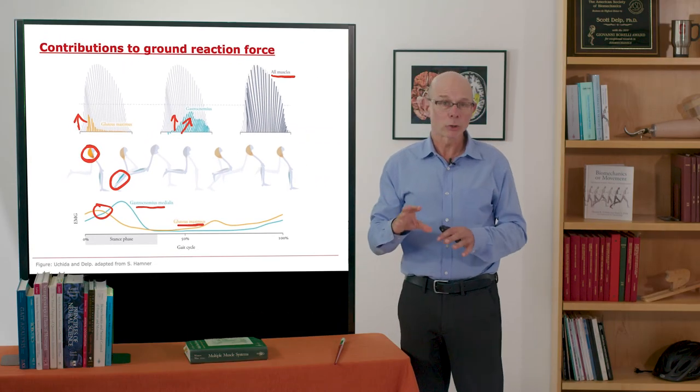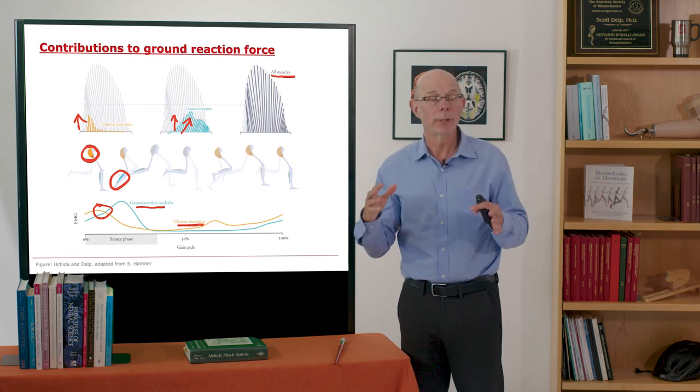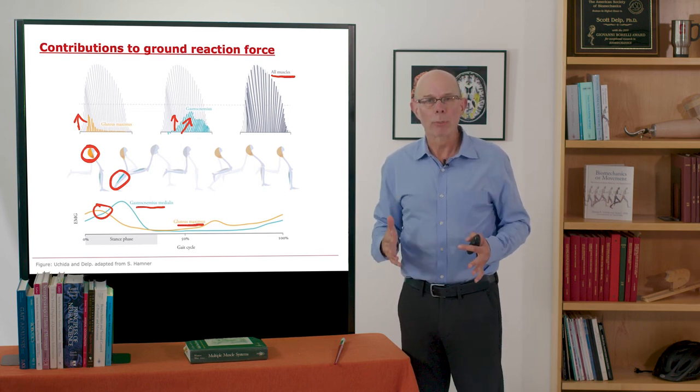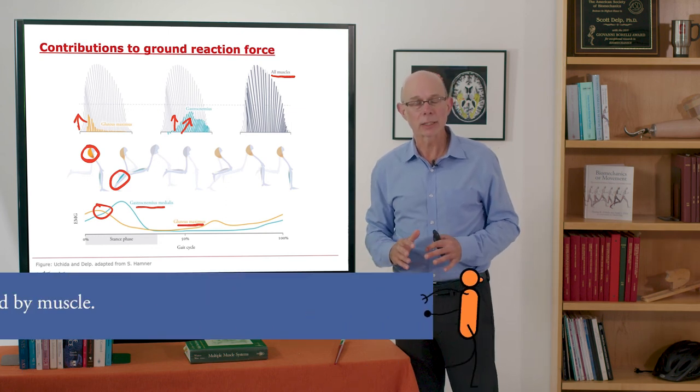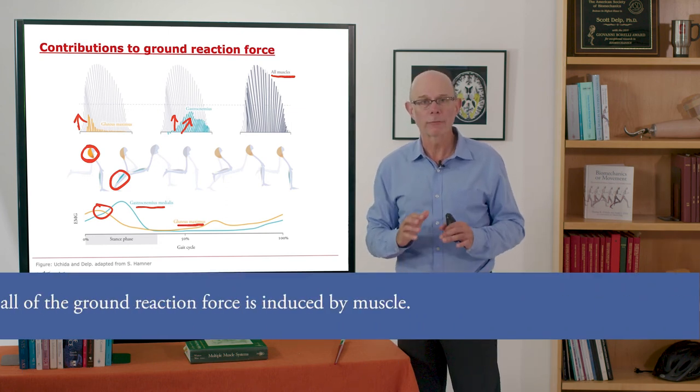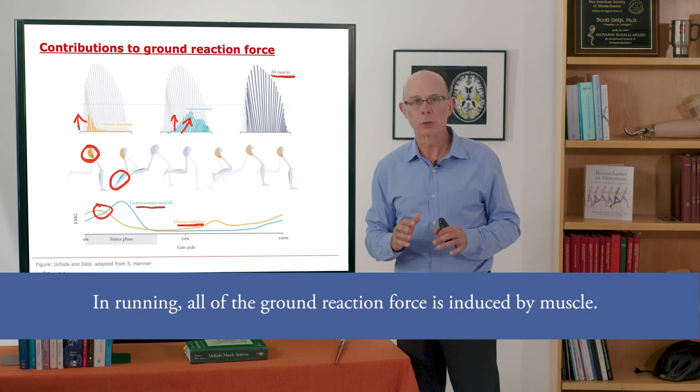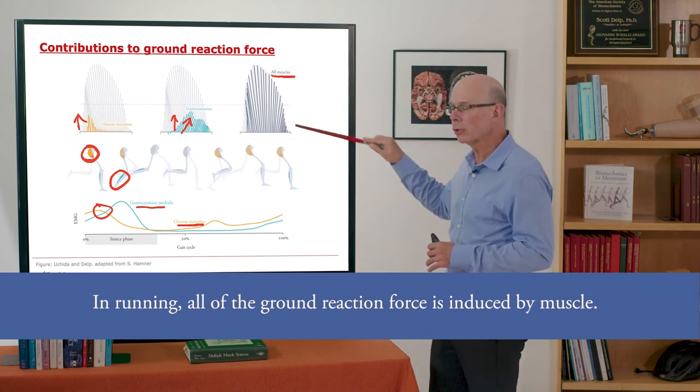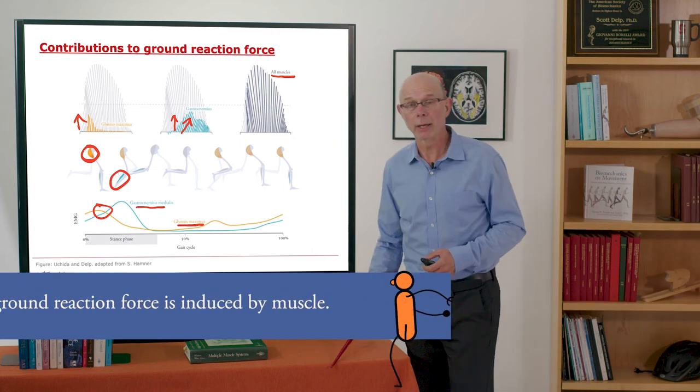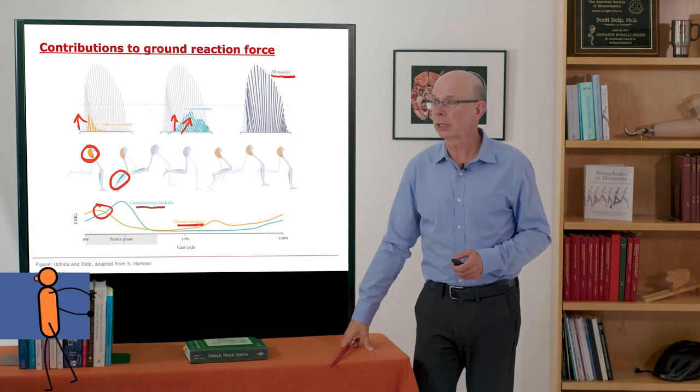The final plot I'm showing here is the total ground reaction force and that provided by muscle. And remember in walking, muscle provided most but not all because there was some support provided by the skeleton. In running, that's not the case. In running, all of the ground reaction force is induced by muscle. So you can see that ground reaction force produced by muscle and measured by a load cell are essentially identical.